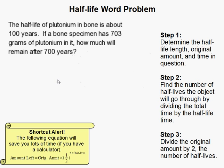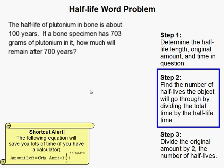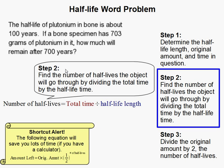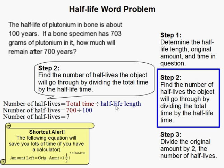The next thing we need to do is find the number of half-lives that the object goes through. You do this by dividing the total time by the half-life time. Since the total time is 700 years, we divide that by the half-life length, which is 100. So that means it's going to go through seven half-lives, or it's going to divide itself in half seven times.